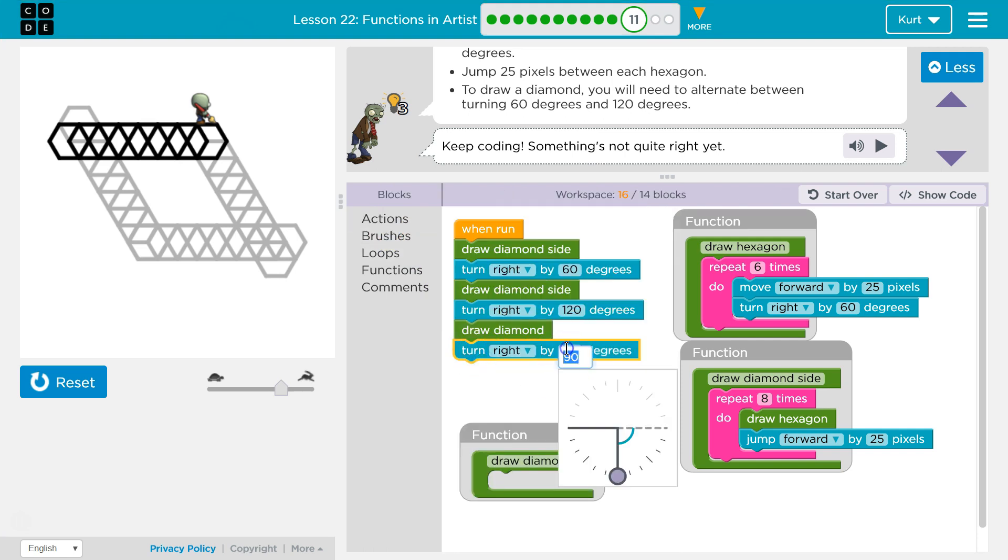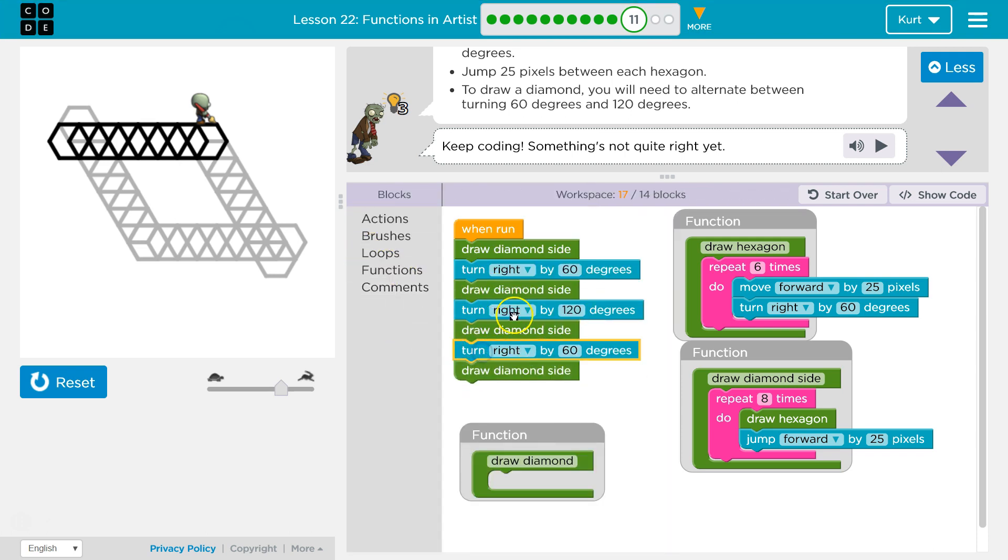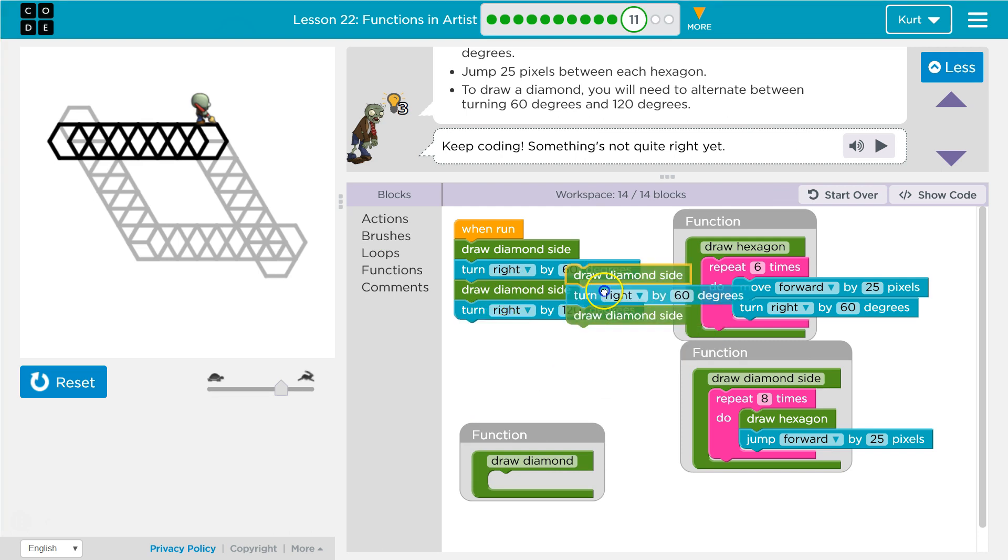And we're at 14 blocks, so we're in trouble. But I'm going to keep going to show you. So we then want to turn 60 because we'll be right here. And then what do we want to do? Well, we want to draw a diamond side. This should be draw a diamond side. And we can have a 120 at the bottom of this because that just means at the beginning we go back and face our starting point.